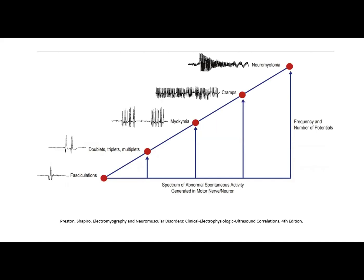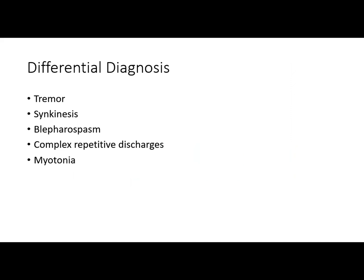Myokymic discharges may share some features with other discharges arising from individual motor units as depicted in this chart, but from a diagnostic perspective, it's probably more important to distinguish them from other types of activity such as tremor, poorly sustained complex repetitive discharges, and brief myotonic discharges that sometimes lack the typical waxing and waning frequency and amplitude.